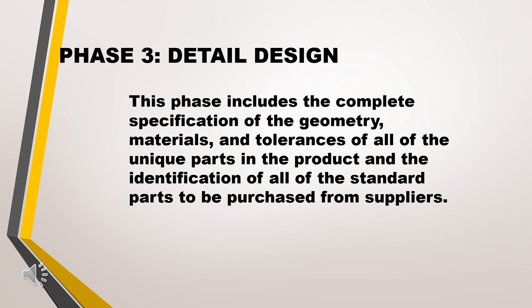Phase 3 is detail design. This phase includes the complete specification of the geometry, materials, and tolerances of all unique parts in the product, and the identification of all standard parts to be purchased from suppliers. The final documentation for the detailed design is made here. Three critical issues finalized in this phase are materials selection, production cost, and the expected performance of the product.